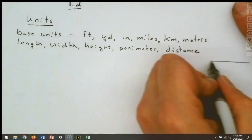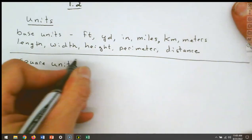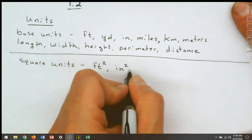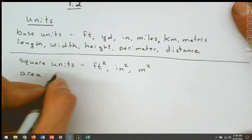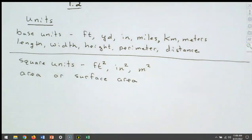Then we have square units — your units squared — things like square feet, square inches, square meters. What do square units go with? They go with either area or surface area. So if we ever see something that has a square unit attached to it, that came from an area, either surface area or just area, like a rectangle: length times width.